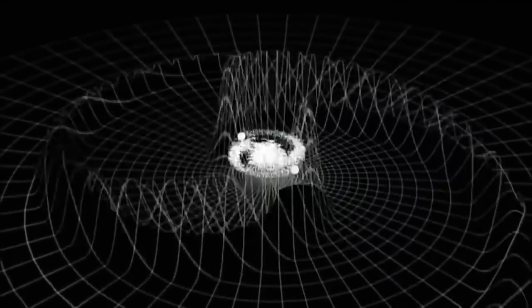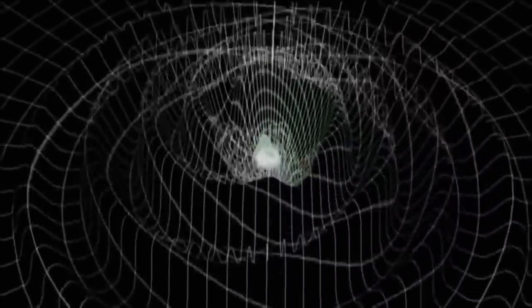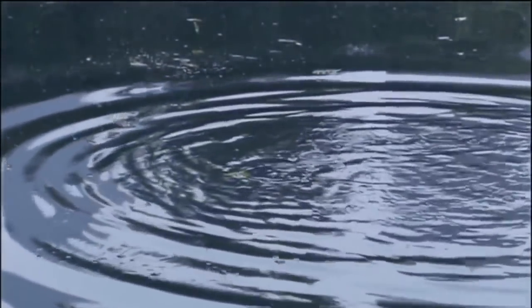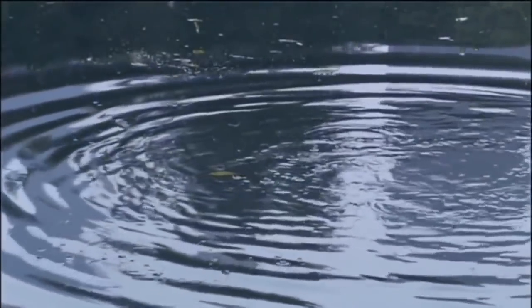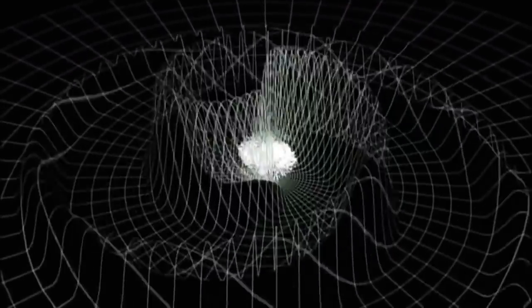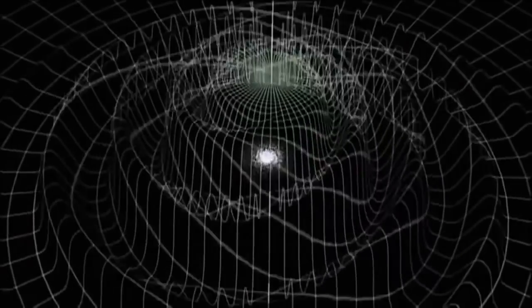He predicted that when massive bodies accelerate, or whip around each other, they can stir up the normally smooth fabric of space-time. It's like a rock hitting a pond. Some of the energy of the impact is transferred to waves that move outward along the surface. Likewise, a titanic collision of black holes would send waves, gravity waves, racing across the universe.